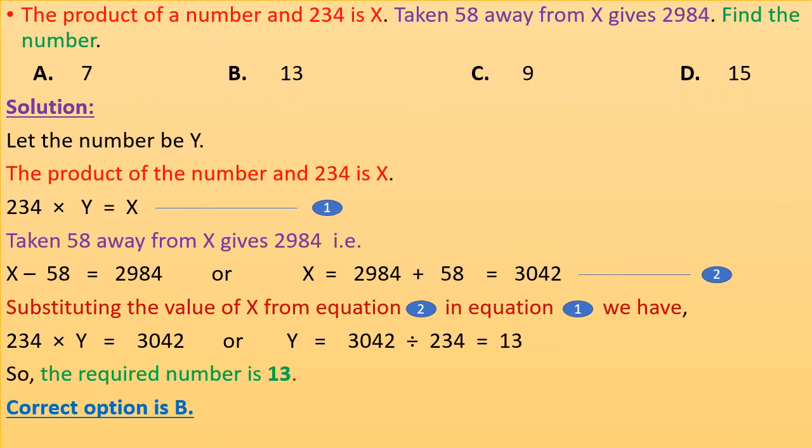The product of a number and 234 is X. Taking 58 away from X gives 2,984. Find the number. Let the number be Y. The product of the number and 234 is X, so 234 × Y = X. This is equation 1.